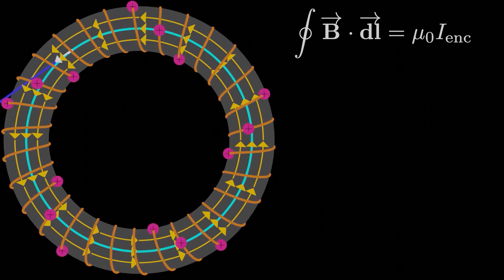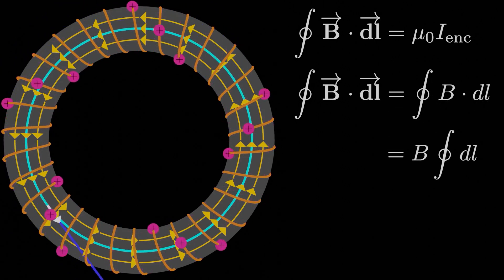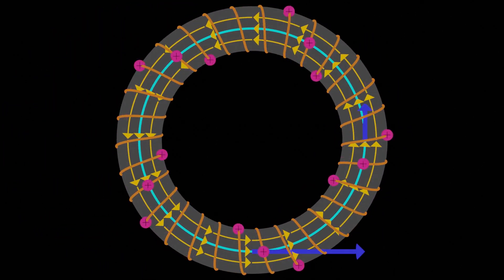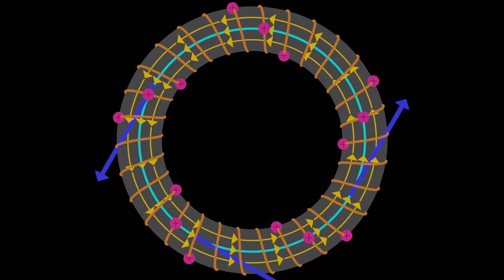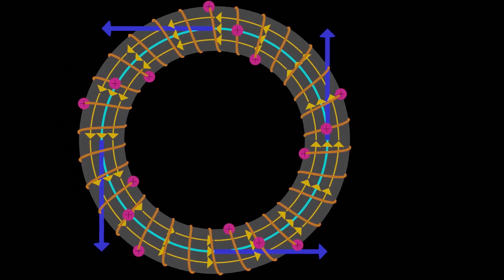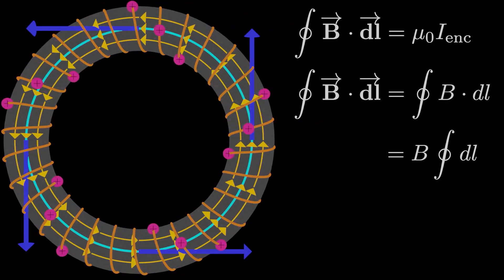B is always parallel to dℓ, so B dot dℓ is just the magnitude of B times the magnitude of dℓ. By symmetry, B is constant along the curve using a similar argument to when we were dealing with just a straight wire. It doesn't matter how we twist the toroid, it's still the same toroid, so the magnetic field at the corresponding point has to be the same as well. That means we can pull B out of the integral, and the integration of dℓ all along the loop is just the circumference of the Amperian loop, or 2π times the radius of the Ampere loop.